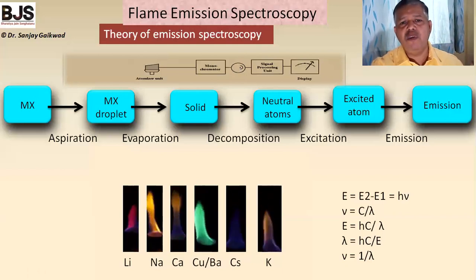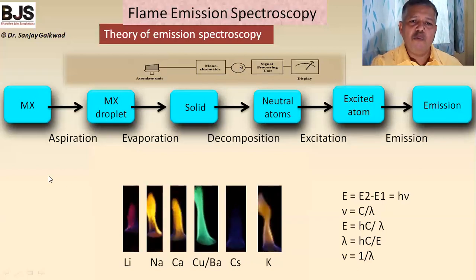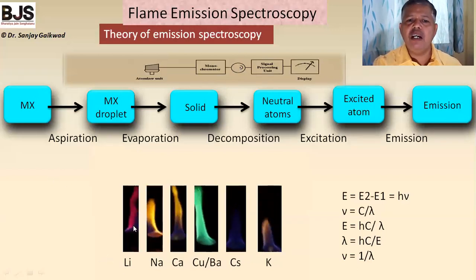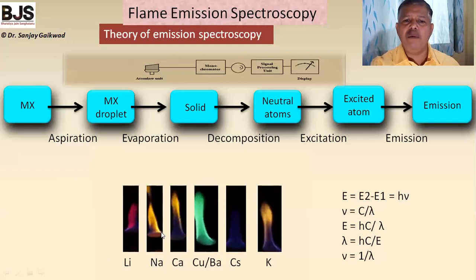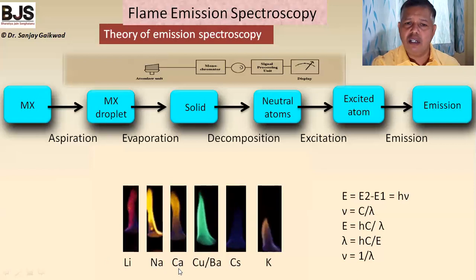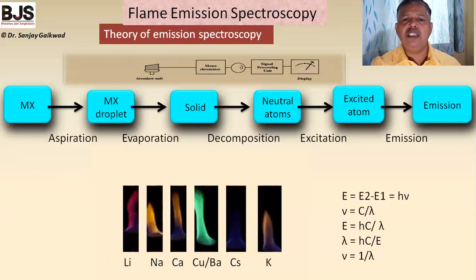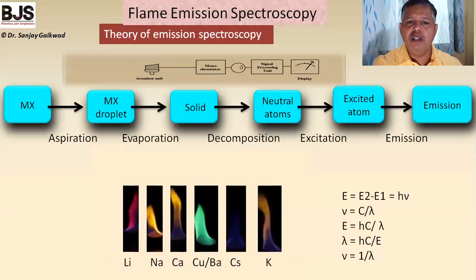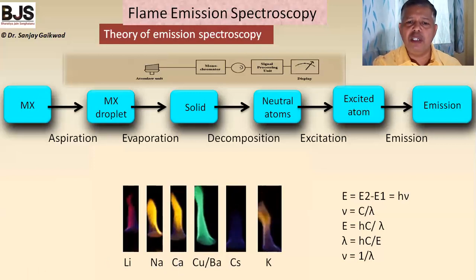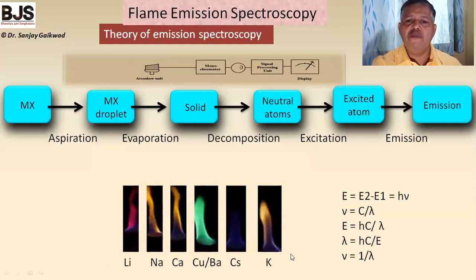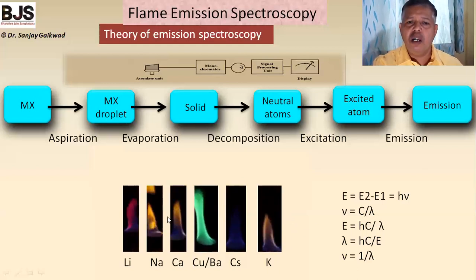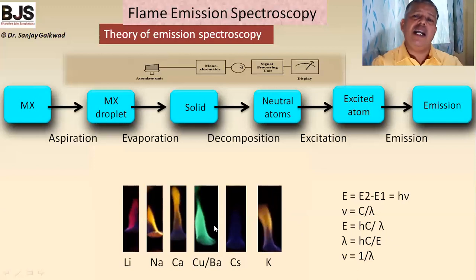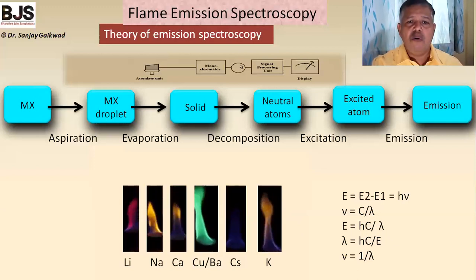For example, lithium gives a pink colored flame. When sodium enters the flame it gives a yellow color. When calcium metal ion enters the flame it gives a sort of brown colored flame. When copper or barium enters the flame a greenish-blue colored flame is given out. When cesium is introduced, a completely blue colored flame comes out, and when potassium is introduced, a slightly reddish colored flame is given out.